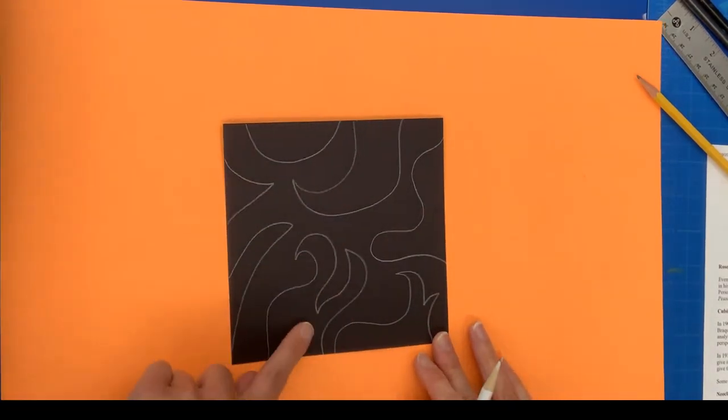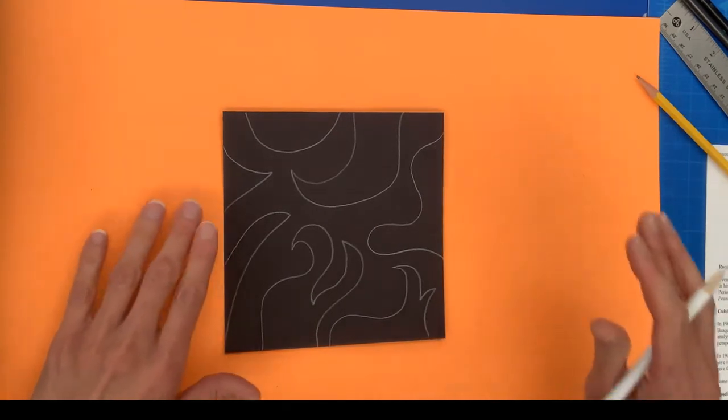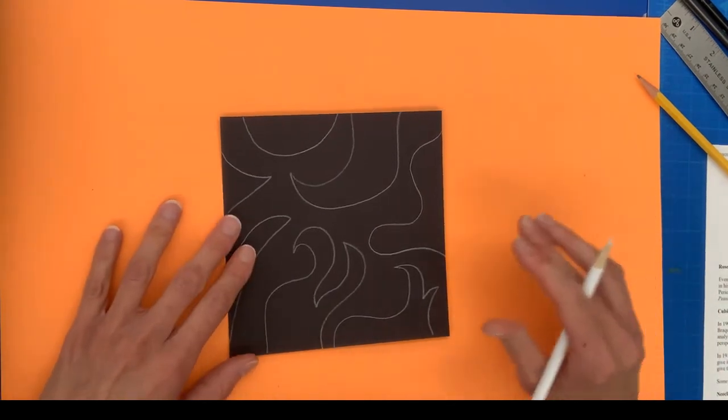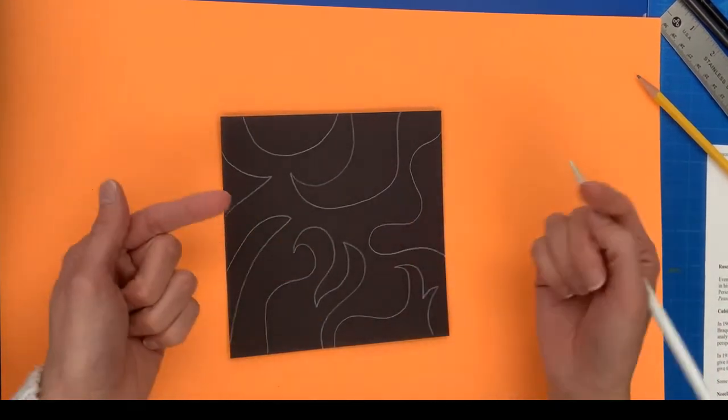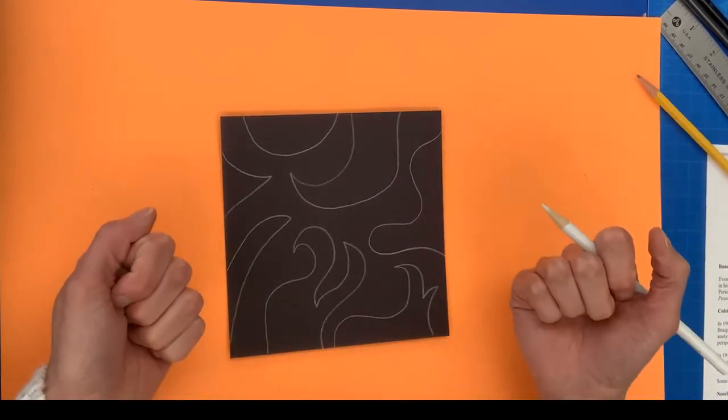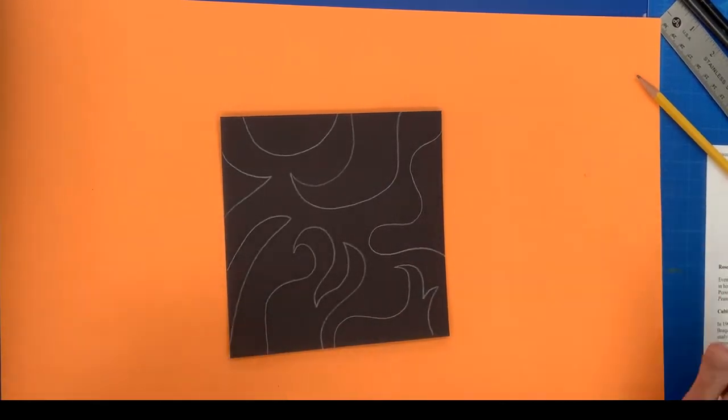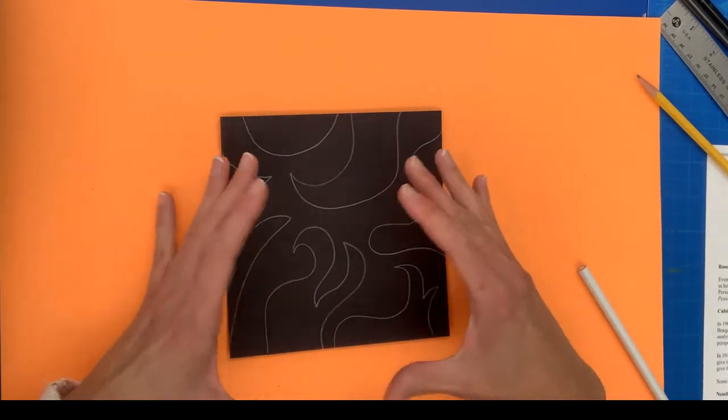You can do smaller shapes, you can do longer thinner shapes, but you do want to make sure that most of those shapes fill up the inside piece of the square. So the next part of the video is going to be done in a time-lapse where I'm going to be cutting out the shapes and flipping them out onto my paper.